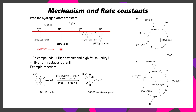Tris(trimethylsilyl)silane reacts in the presence of an initiator, which will first abstract the hydrogen atom from this hydrosilane to prepare the corresponding silicon-centered radical. This silicon-centered radical is then able to abstract something such as a halogen, which then generates a carbon-centered radical which can be trapped by a hydrogen radical source. The hydrogen radical can then come from the tris(trimethylsilyl)silane starting material, or if you use a thiol co-catalyst, that will react even faster.